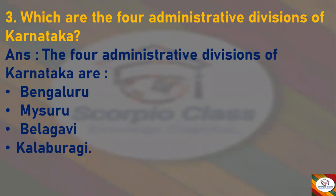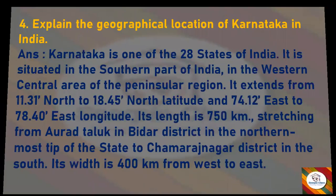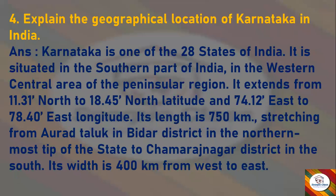Next question: Which are the four administrative divisions of Karnataka? Answer: The four administrative divisions of Karnataka are Bangalore Division, Mysore Division, Belagavi Division, and Kalaburagi Division. Next question: Explain the geographical location of Karnataka in India. Answer: Karnataka is one of the 28 states of India, situated in the southern part of India.